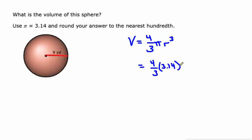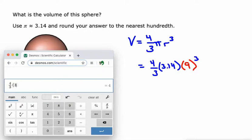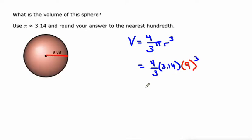The radius is 9. So we'll do that cubed and then we'll let the calculator work its magic here. So four thirds times 3.14 times 9 to the power of 3. That gives us 3052.08, and we're rounding to the nearest hundredths so we're okay. 3052.08, and that measurement is gonna be in cubic yards.